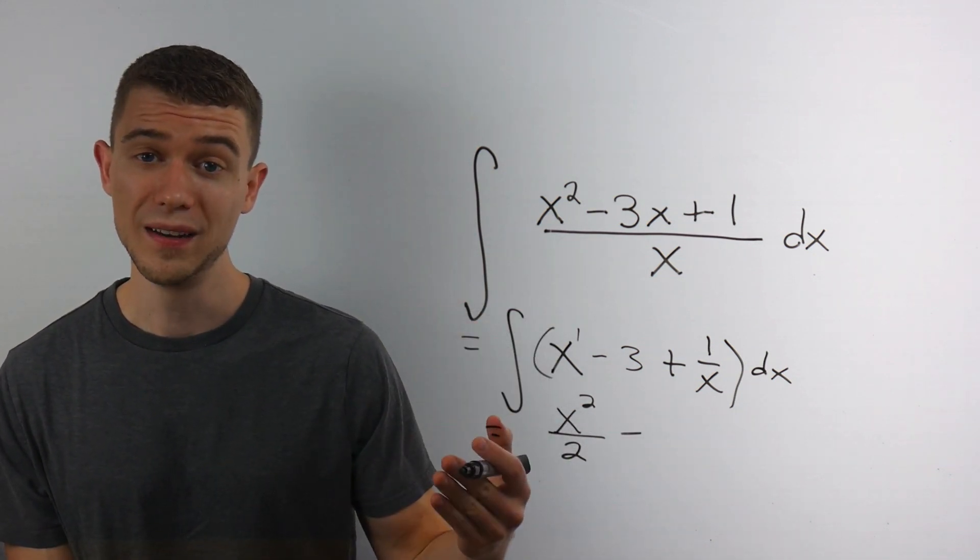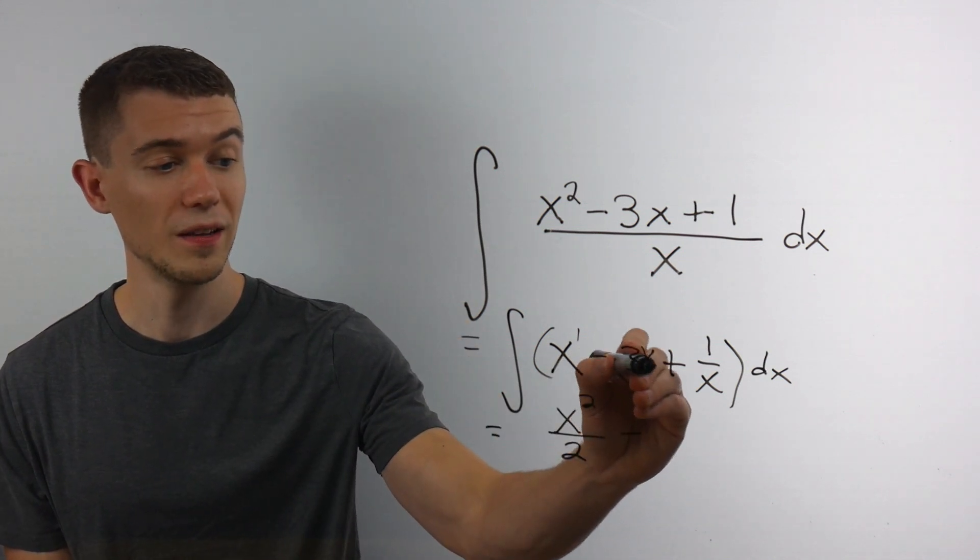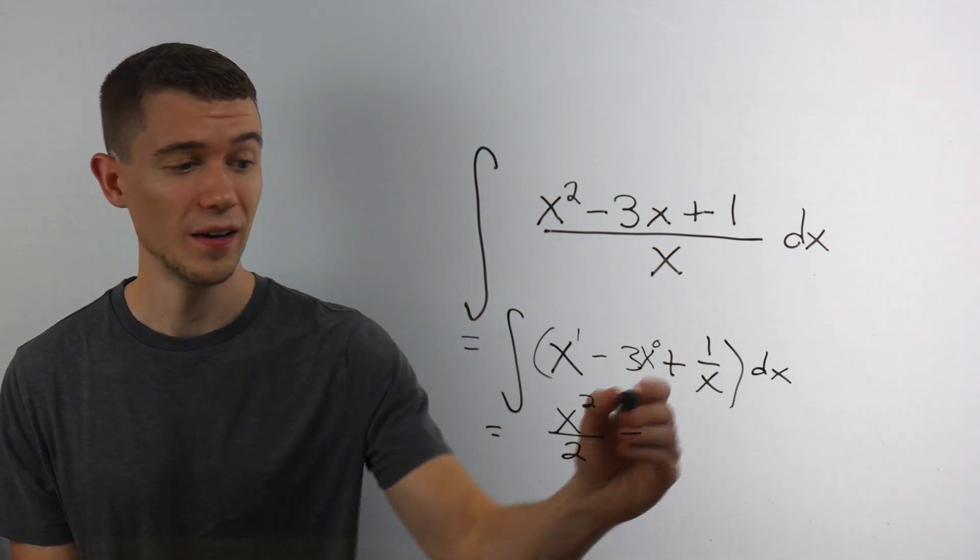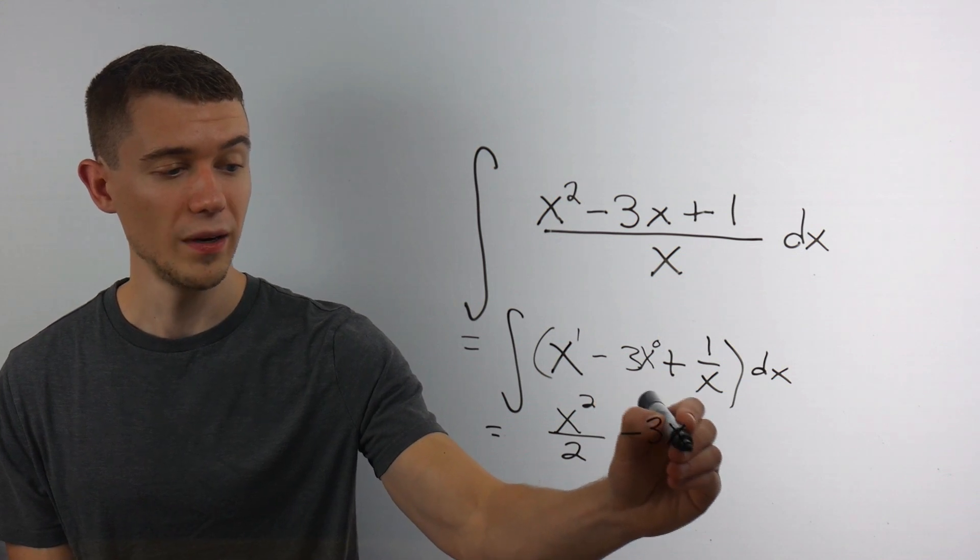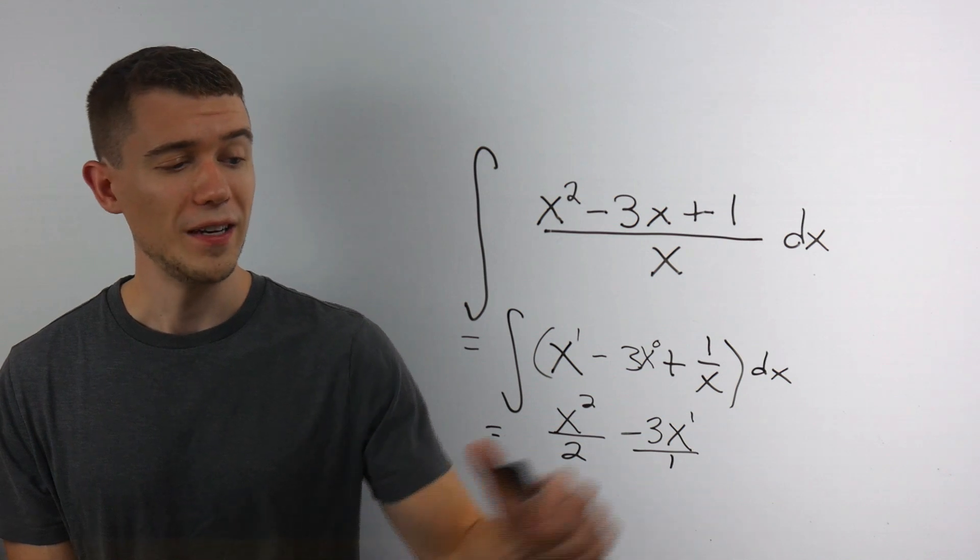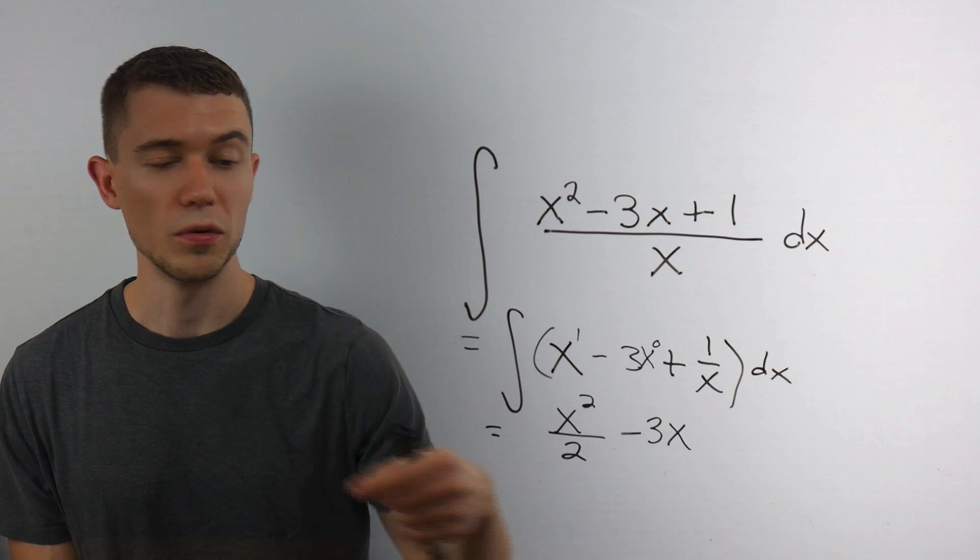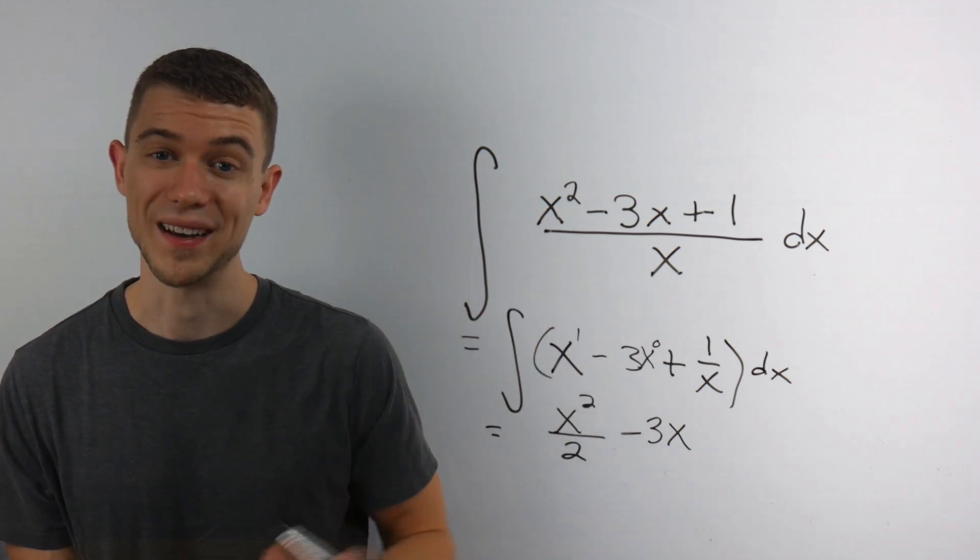The anti-derivative of 3, well there's no x there, or you could think of there being like an x to the 0 there. So this will just be 3x to the 1st over 1. And you don't really need to write the first power or over 1 if you like. You can just remember the anti-derivative of 3 is 3x.